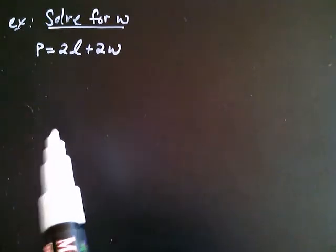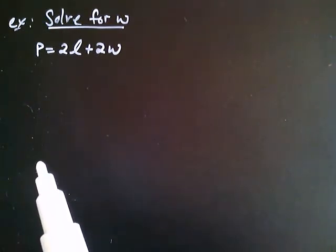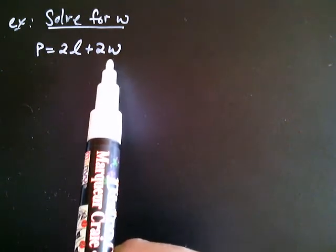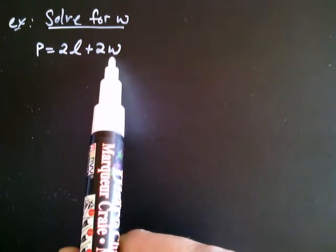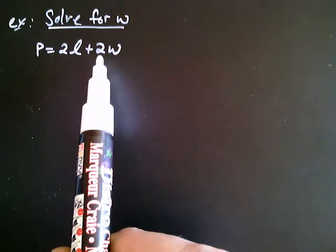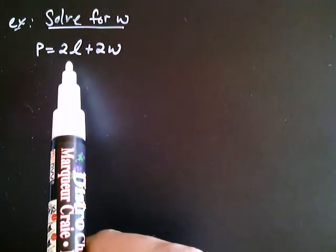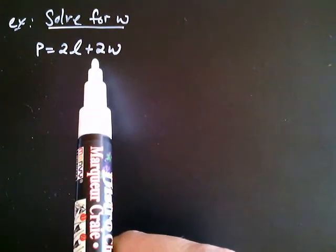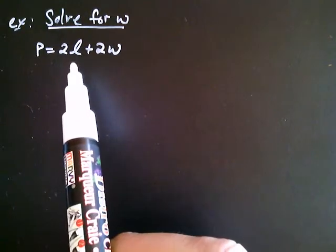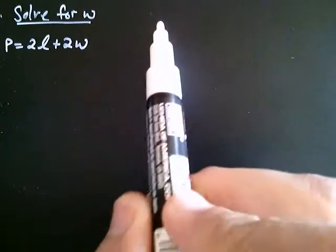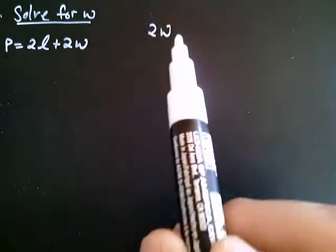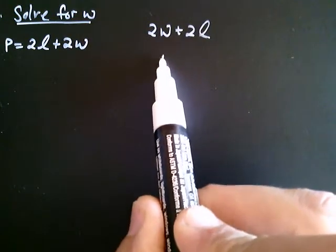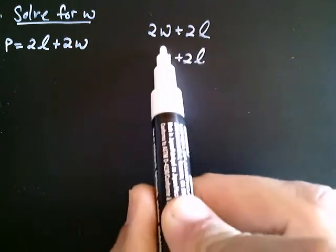Well, the key lies in thinking about what we talked about in a previous video. Think about this W as being a couple things have been done to this W. Somebody's multiplied by 2 and they've also added 2L. Now let me ask you, did somebody first take W and multiply by 2 or did they first add 2L? That is, did somebody first take W and multiply by 2 and then add 2L? Or did somebody first add 2L and then multiply by 2?